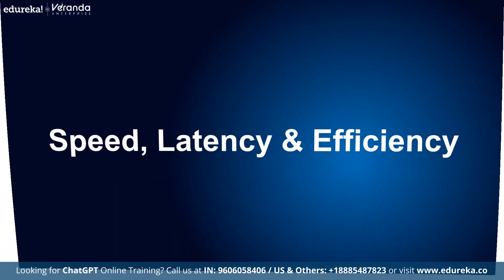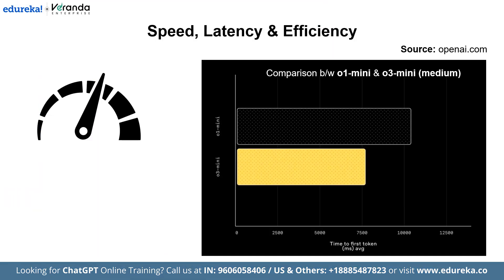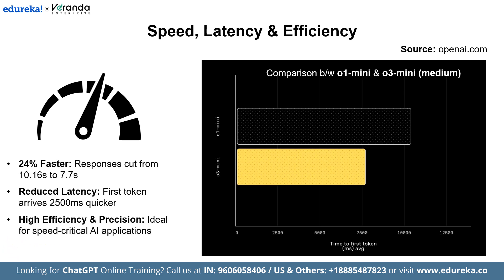Next, let us talk about speed, latency, and efficiency. Speed is a crucial factor in today's AI applications. In A/B tests, O3 mini delivers responses 24% faster than its predecessor, averaging 7.07 seconds compared to 10.16 seconds. The model also reaches the first token 2,500 milliseconds faster than O1 mini, ensuring a more responsive user experience. These improvements make O3 mini an excellent choice for developers who require both efficiency and precision.